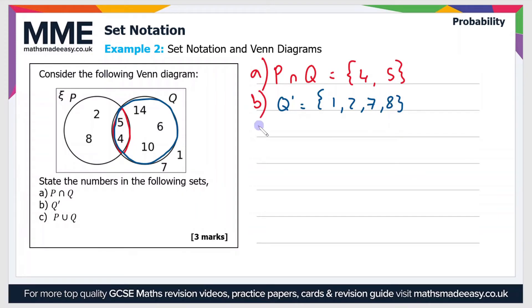So finally then, part c. So c is P ∪ Q. So that's the union symbol, so that's the numbers inside both circles, or either circle. So that's everything inside both of those circles. So that is the set—if I use set notation again—{2, 4, 5, 6, 8, 10, 14}.